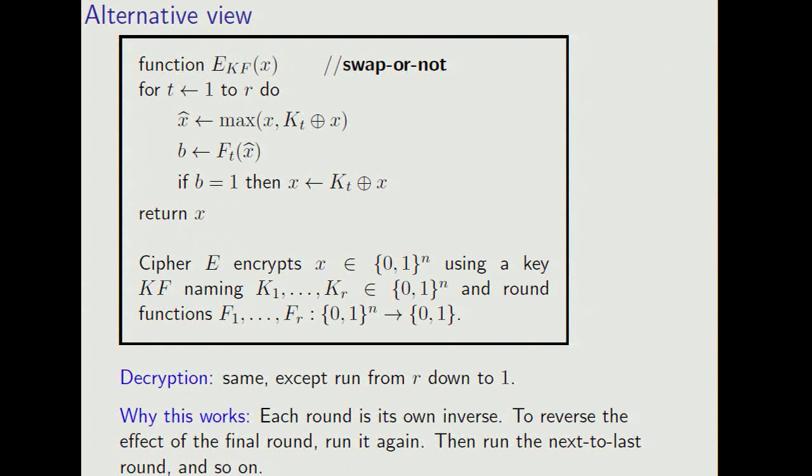Here's another way of looking at it. How do we encipher x? Well, for each round, if the current state is x, we're going to pair that with kt x or x. Now choose some canonical representative from the pair, say the max. You could use the min, doesn't matter. And call that x hat.